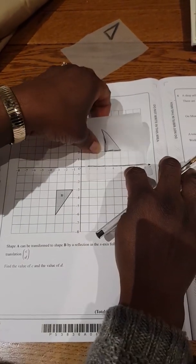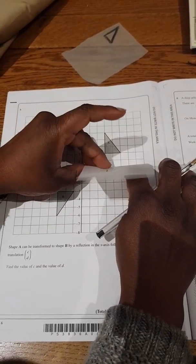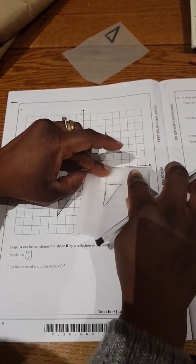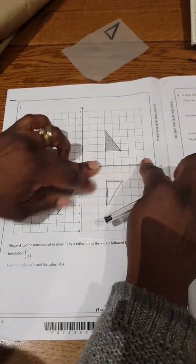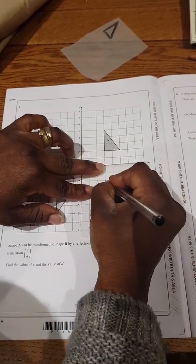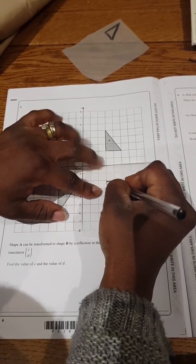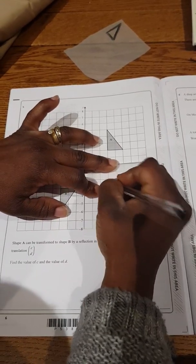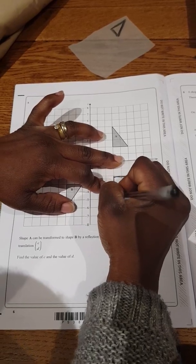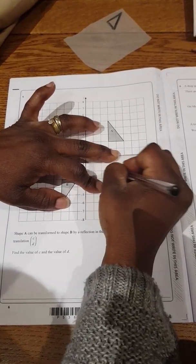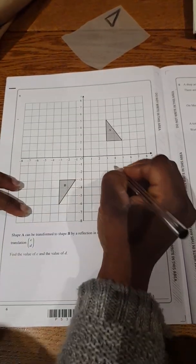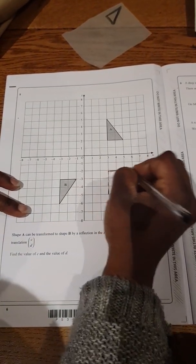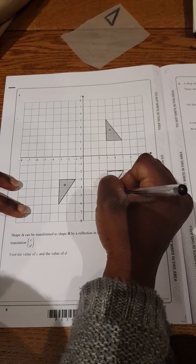Now we flip. Reflection is like flipping. So we flip it. Make sure that your mirror line doesn't move. And now you can trace it hard on the reflected side, and then you can trace it properly afterwards.